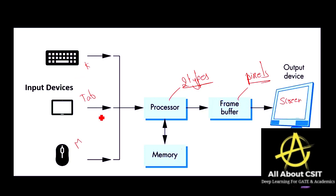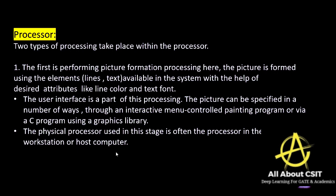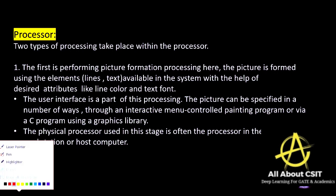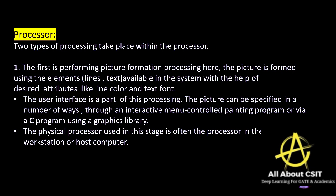The processor selected must support the graphical user interface, the memory must support graphics, and the frame buffer must be present between the processor and the screen. There are two types of processing that take place within the processor when working on the graphic system.